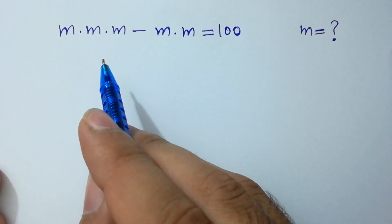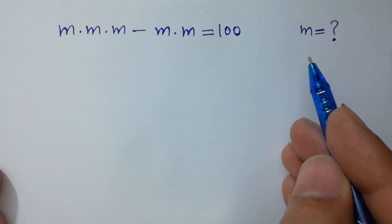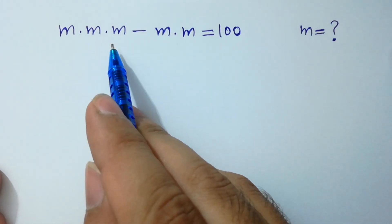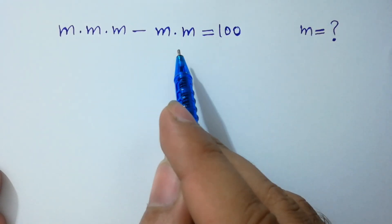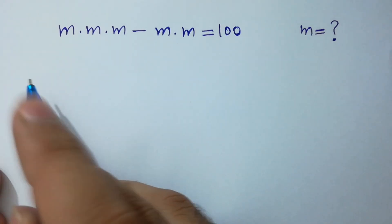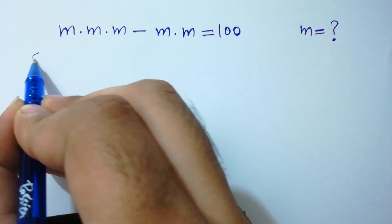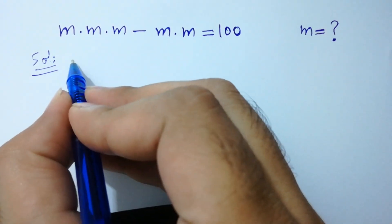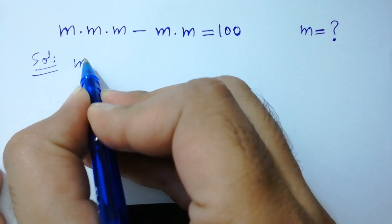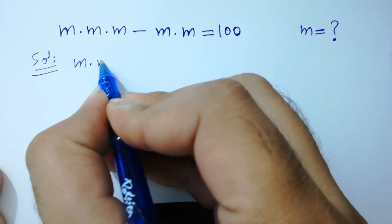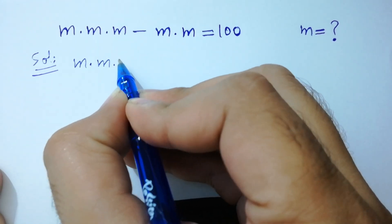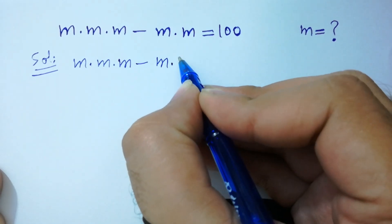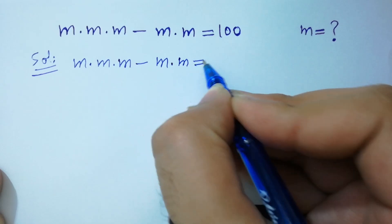Hello friends, find the value of M if M times M times M minus M times M equals 100. Let's solve it. We have M times M times M minus M times M equal to 100.